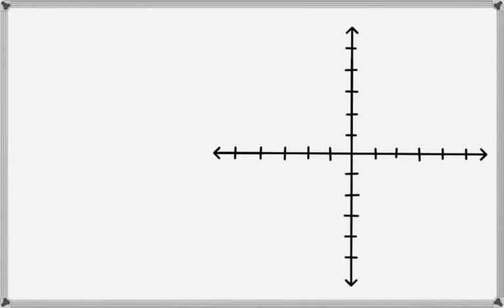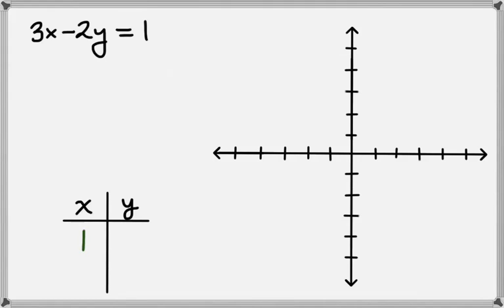Okay. Let's do another one. How about 3x minus 2y equals 1? Well, this time, let's choose x equals 1 for our first point. And we'll plug that in.